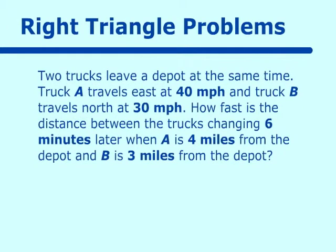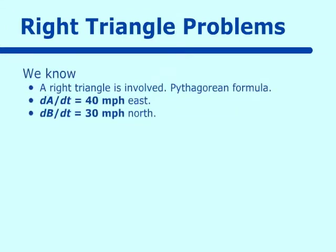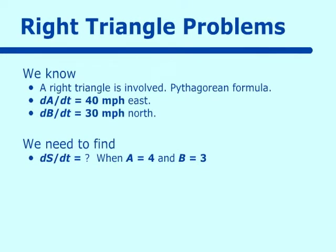Let's do another type of right triangle problem. Two trucks leave a depot at the same time. Truck A travels east at 40 miles per hour and truck B travels north at 30 miles per hour. How fast is the distance between the trucks changing six minutes later, when A is four miles from the depot and B is three miles from the depot?